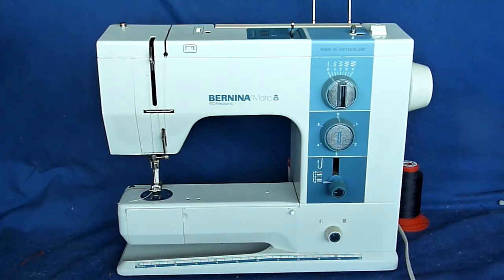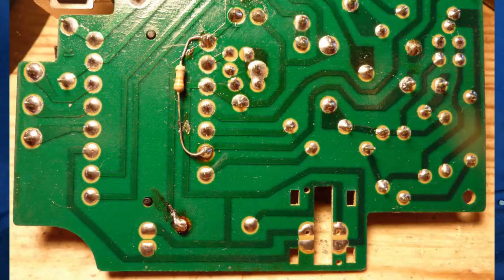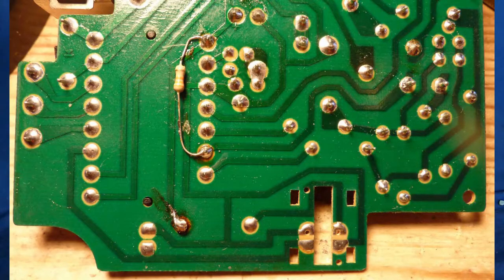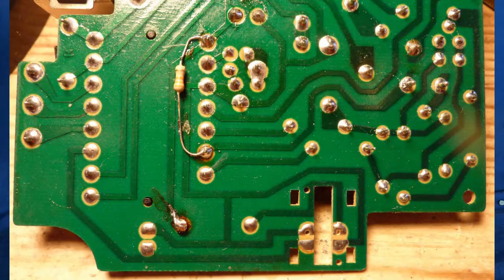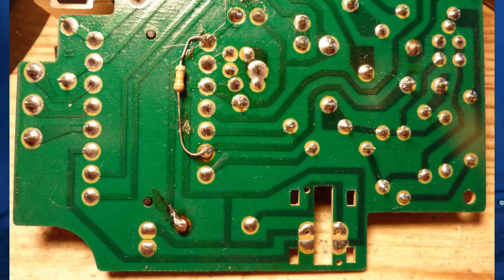It is likely that you can do the same with a Bernina 930 because it has got similar electronics. The modification looks like this and it is an add-on of a 33 kilo ohm resistor on a printed circuit board.